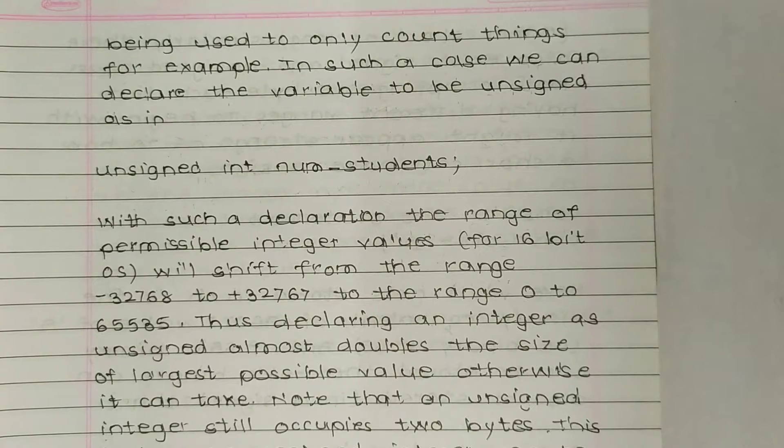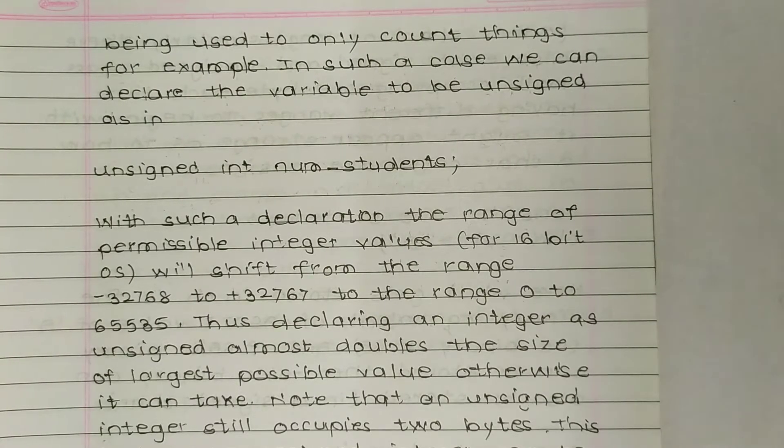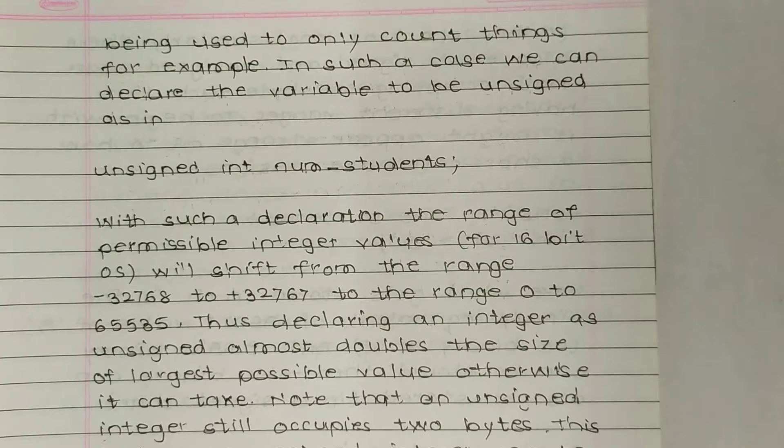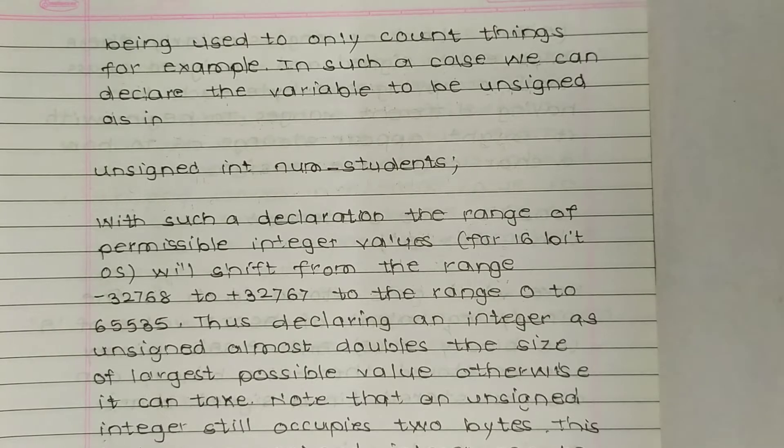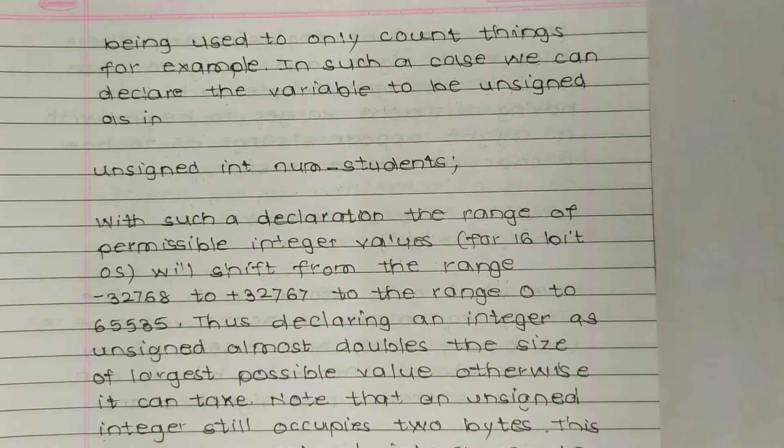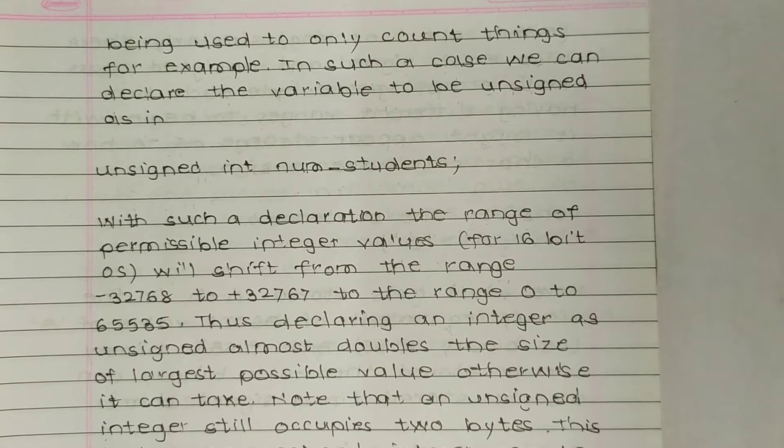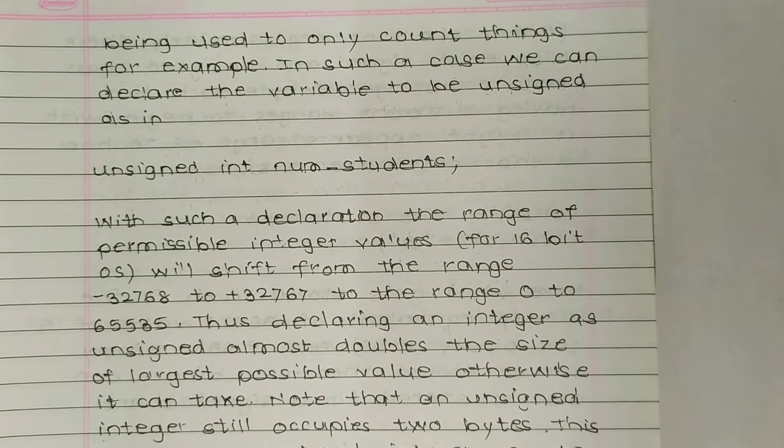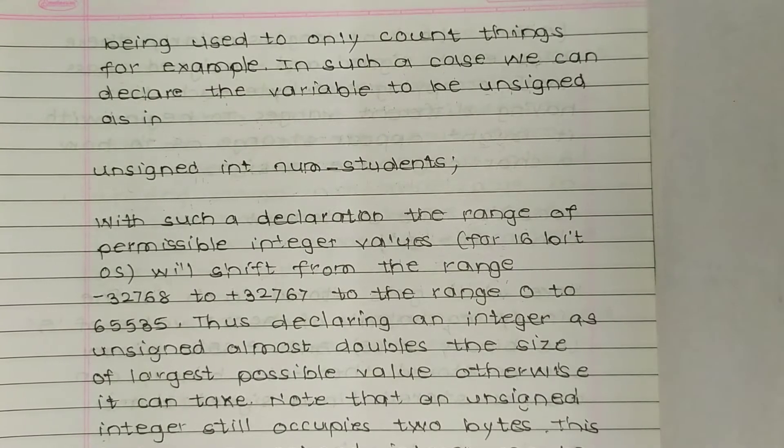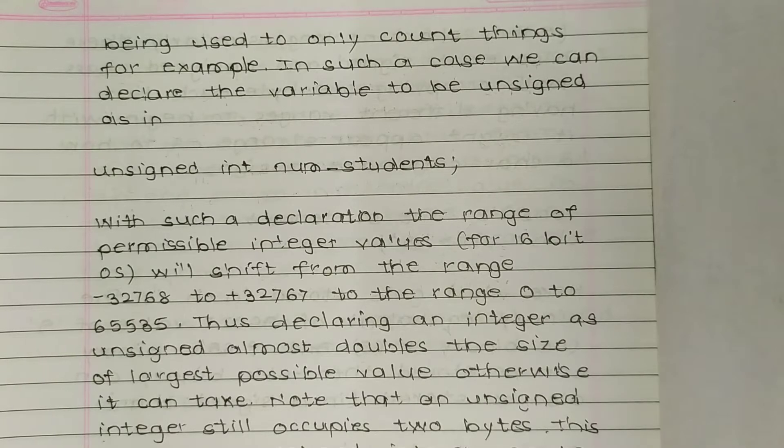With such a declaration, the range of permissible integer values for 16-bit OS - there are 16, 32-bit, and 8-bit OS - will shift from the range minus 32767 to plus 32767. 32767 is given because 0 is also included here.